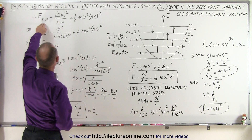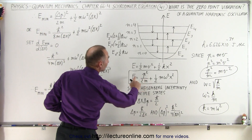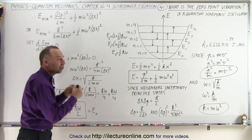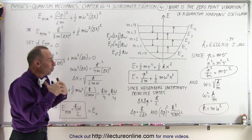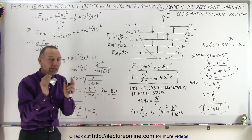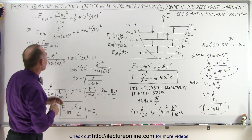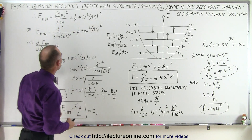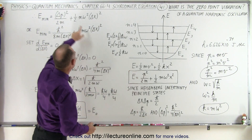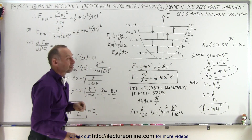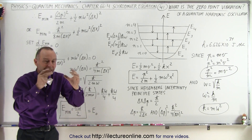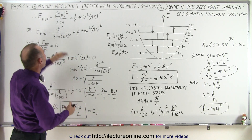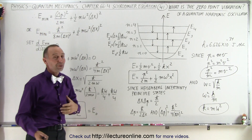If we go to our minimum energy and write it in terms of momentum and position, we say that the minimum energy an oscillator can have is the energy based on the uncertainty principle — in other words, the uncertainty of the position and the momentum. The smallest energy the oscillator can have depends upon the uncertainty in the momentum and the uncertainty in the position. So we replace p by the uncertainty in p, and x by the uncertainty in x — we know nothing more about the oscillator than the minimum defined by the Heisenberg uncertainty principle.